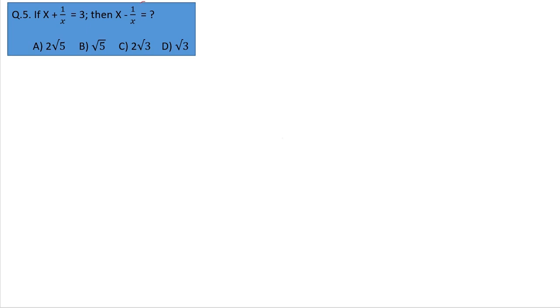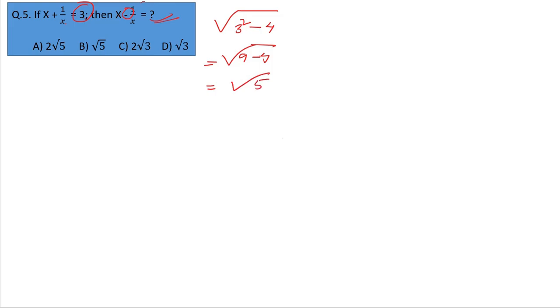Question number five: x plus 1 by x equal to 3, find x minus 1 by x. Using the formula: square 3, that's 9, minus 4. Root over 9 minus 4, root over 5. Option number B.